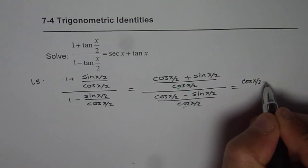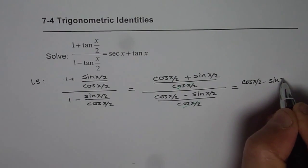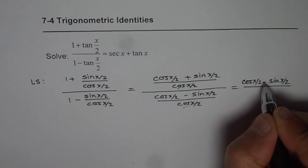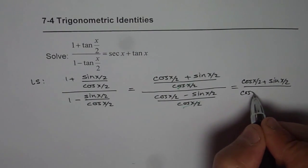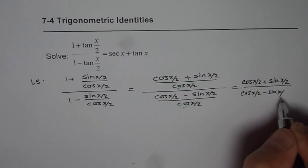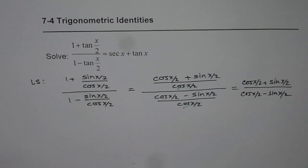In the denominator we have the minus term, so we get it in terms of sine and cosine x/2. Now we need to get secant x plus tan x.